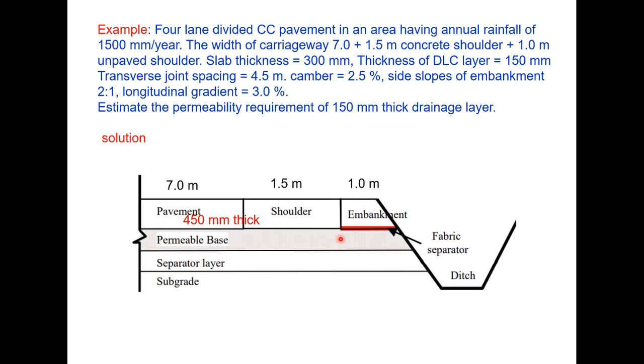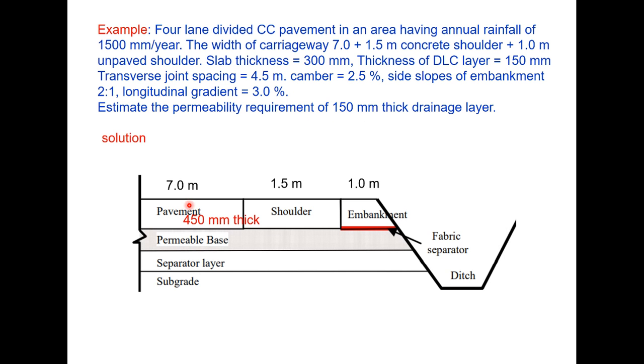Now this is the pavement section. The total thickness here of the slab and DLC is 300 plus 150, 450 millimeter thick. 7 meter is the median, 7 meter is the pavement width, 1.5 meter is hard shoulder, paved shoulder and 1 meter is unpaved shoulder. And this is the slope 2 is to 1. So the total width of the drainage layer at this point that is below DLC will be 7 meter plus 2.5 meter that is shoulder plus this extra width because of embankment that is 2 into 0.45. 0.45 is the depth of the slab and DLC so that is 10.4 meter that is the width of the drainage layer.